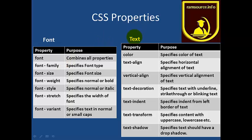For text, we use foreground color which gives the color for your text, and text-align for horizontal alignment. In the text, you can see horizontal alignment and vertical alignment. You can also underline the text, strike-through, or blink the text. You can also do a left indent.